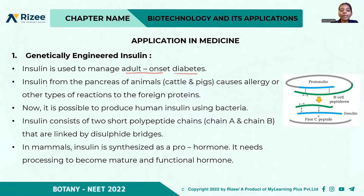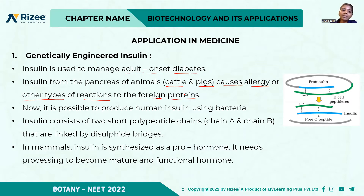Insulin from the pancreas of animals, which is cattle and pigs, causes allergy or other types of reactions to the foreign proteins. When this insulin is inserted into humans, it causes allergic reactions and other side effects.